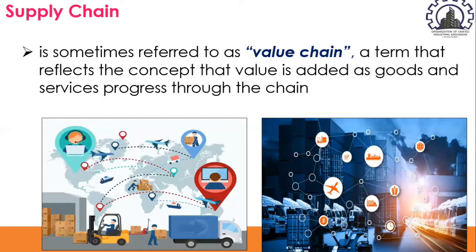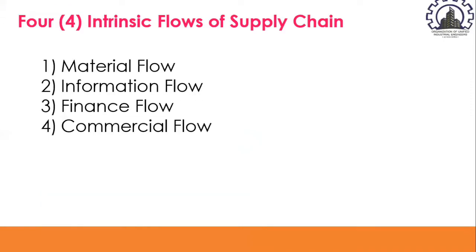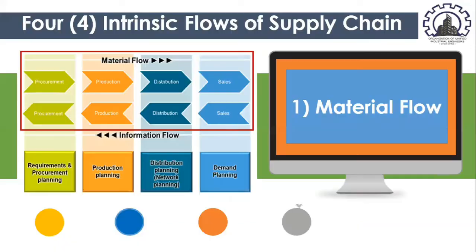Since the business connections between organizations are pervasive, how could one draw a boundary of a supply chain? To answer this, one needs to understand the four intrinsic flows of supply chain: material flow, information flow, finance flow, and commercial flow. Let us discuss each one of them, starting with material flow.